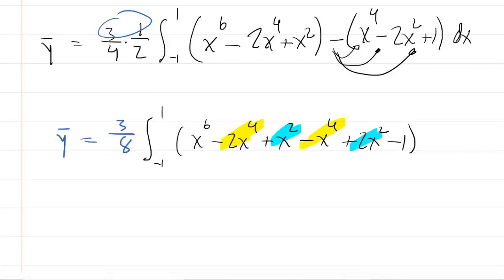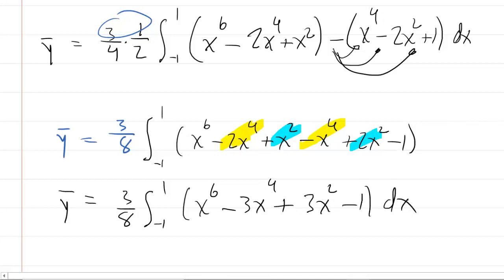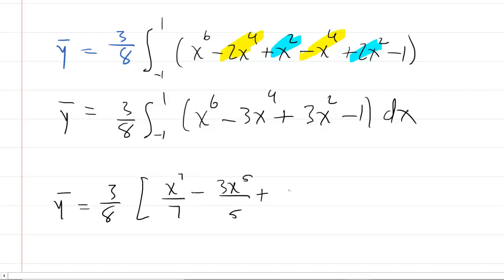Expanding the squares: x cubed minus x squared gives x to the 6th minus 2x to the 4th plus x squared. And x squared minus 1 squared gives x to the 4th minus 2x squared plus 1. After distributing the minus sign and combining like terms — the x to the 4th terms combine to minus 3x to the 4th, and the x squared terms combine to plus 3x squared — the integrand simplifies to x to the 6th minus 3x to the 4th plus 3x squared minus 1.